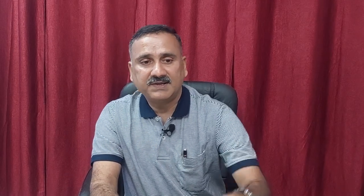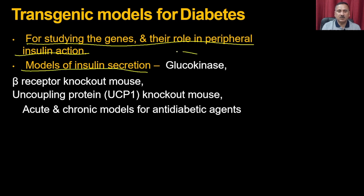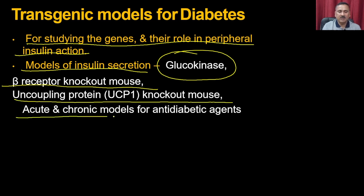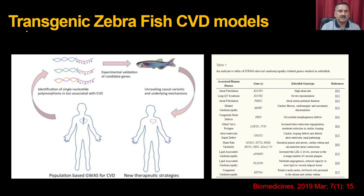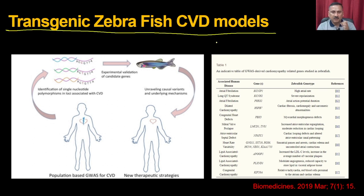For a diabetes transgenic model, studying genes and their role in peripheral insulin action involves glucokinase and beta-receptor knockout mice, uncoupling protein knockout mice, and acute and chronic models for anti-diabetic agents. Transgenic zebrafish models have also been developed for cardiovascular disease.